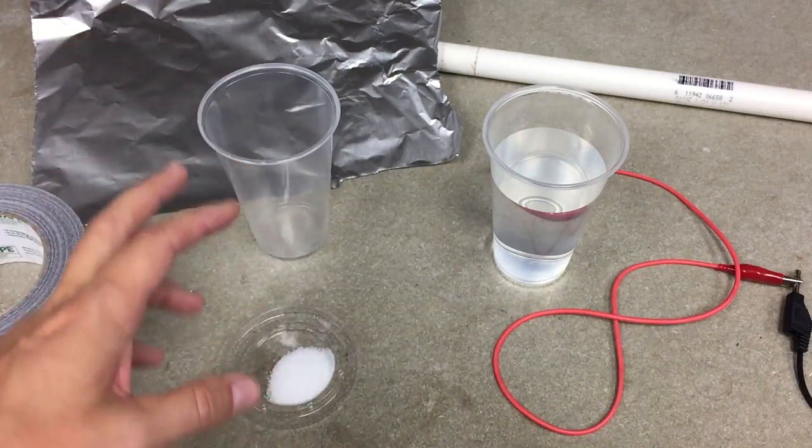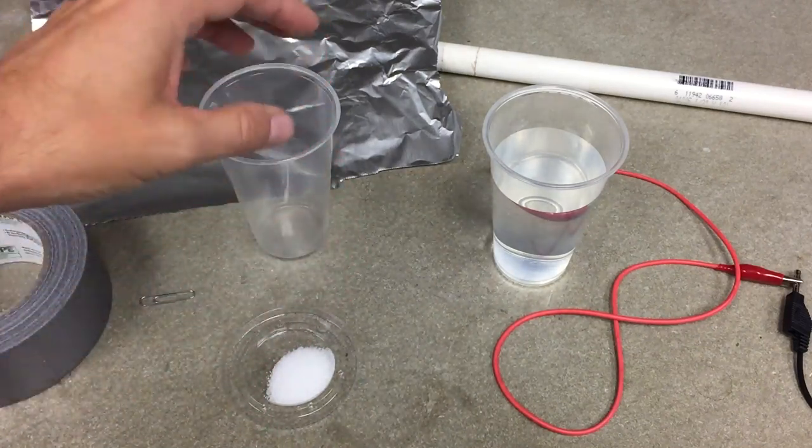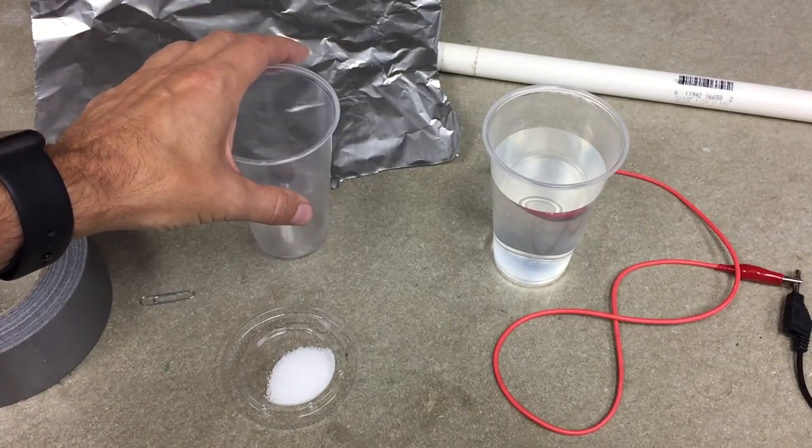We are going to actually make a capacitor, but this is a special kind called a Leyden jar.